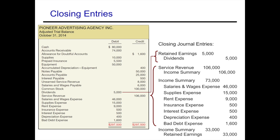Revenues carry a credit balance, so to eliminate that credit balance we debit revenue and credit that amount to the income summary. Then we close all of our expense accounts to the income summary as well. Expenses carry debit balances, so to get rid of those we credit each individual expense account and debit them all to the income summary.